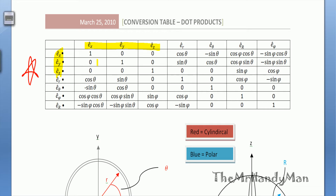Since they're all 90 degrees, you can see that the way they relate to one another is very 0, 1, 0, 1. They only interact with themselves because they're all 90 degrees from each other. Hence, dot products of things that are 90 degrees from each other cancel out to zero.